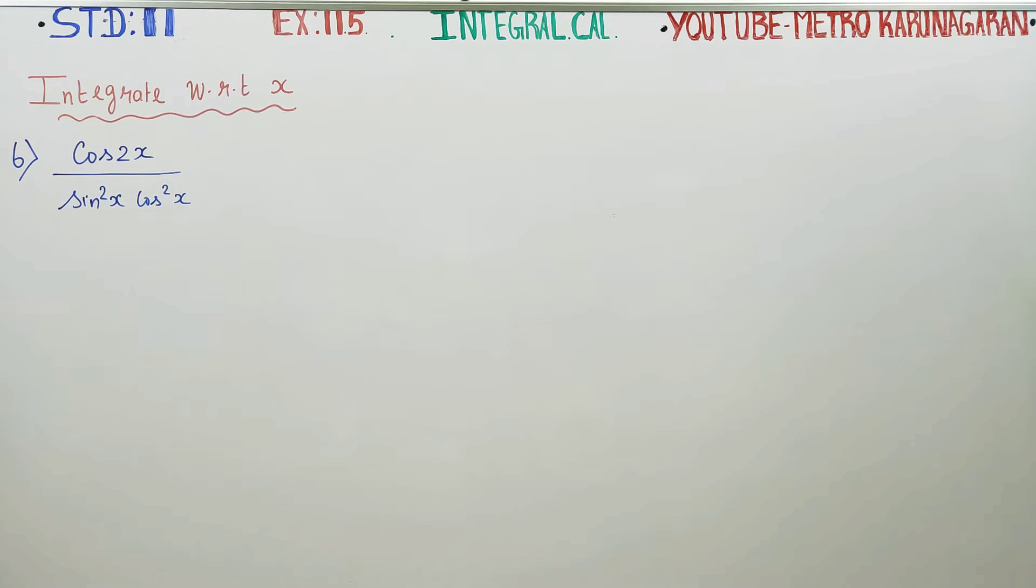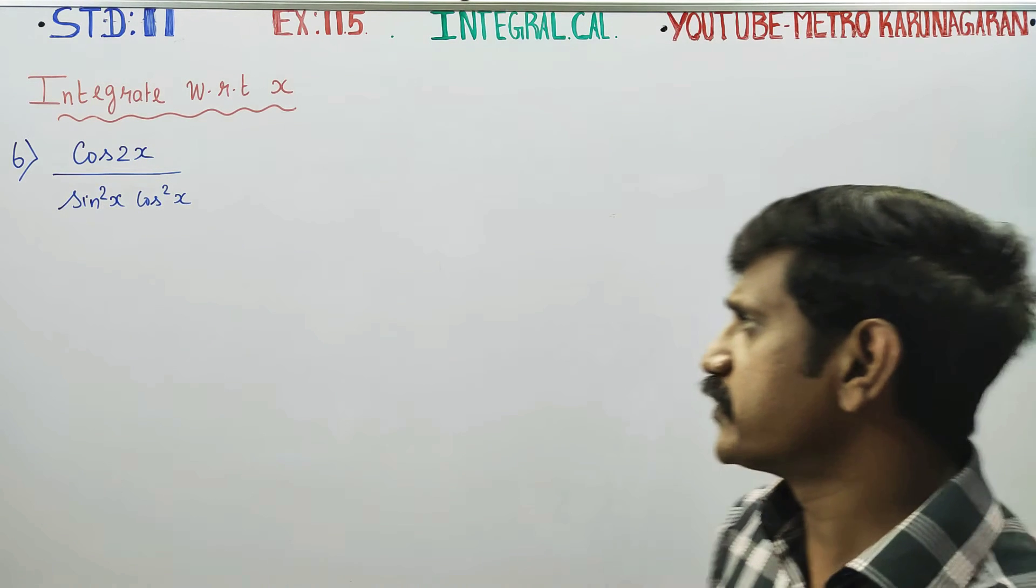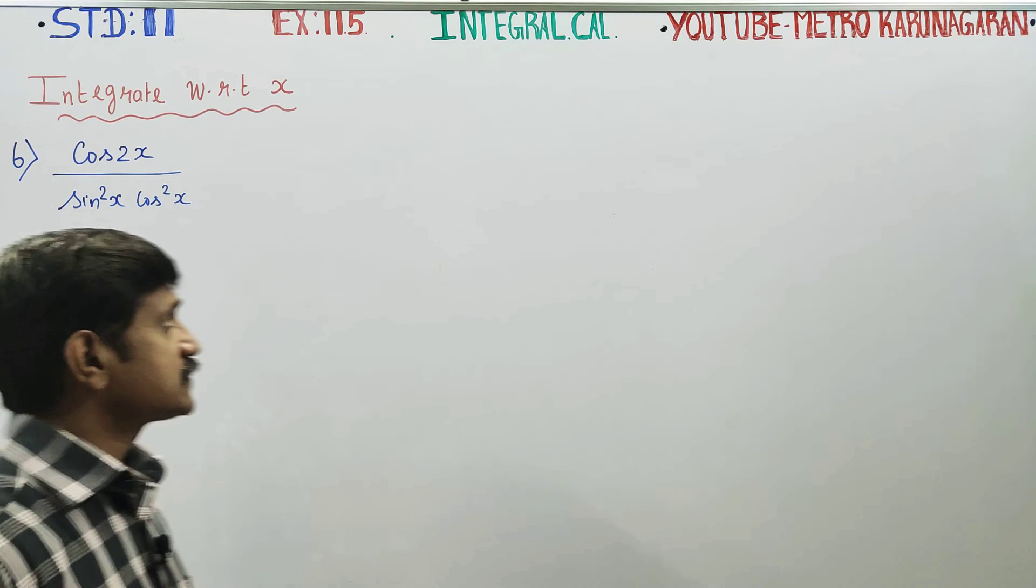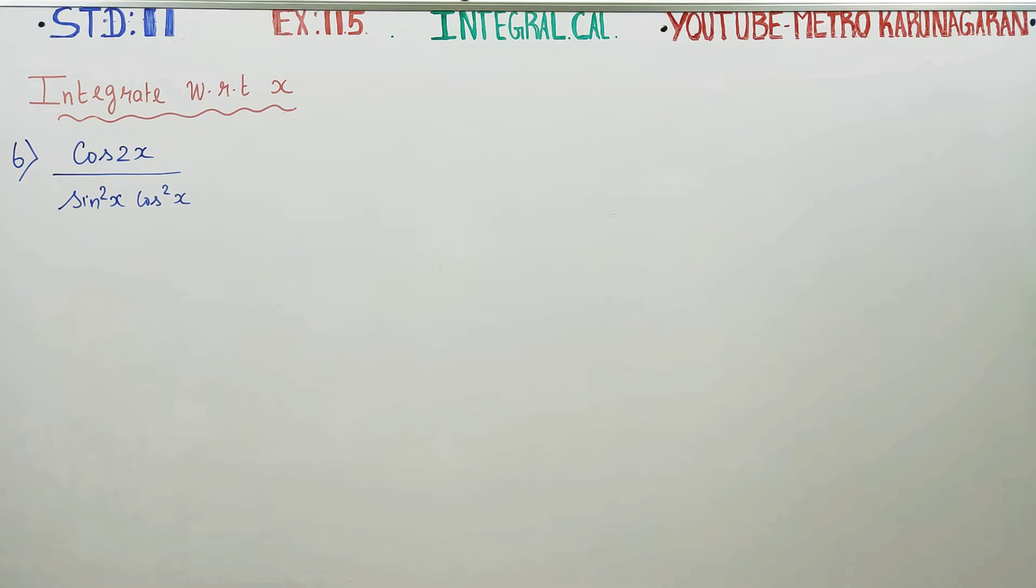Dear learned standard 11 students, in integral calculus, exercise number 11.5, integrate the following with respect to x. Problem number 6: cos 2x by sin square x cos square x.